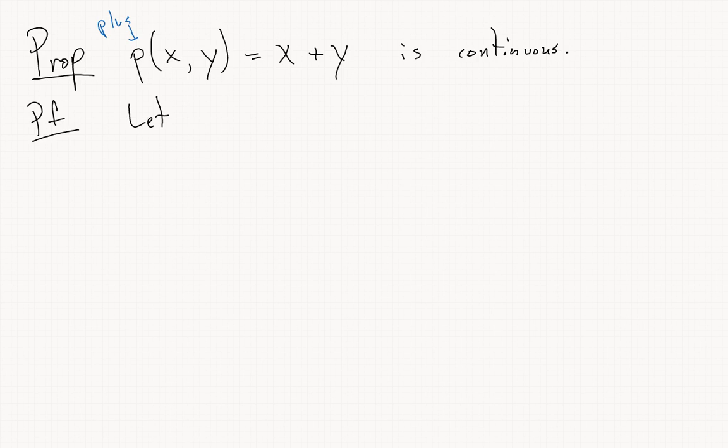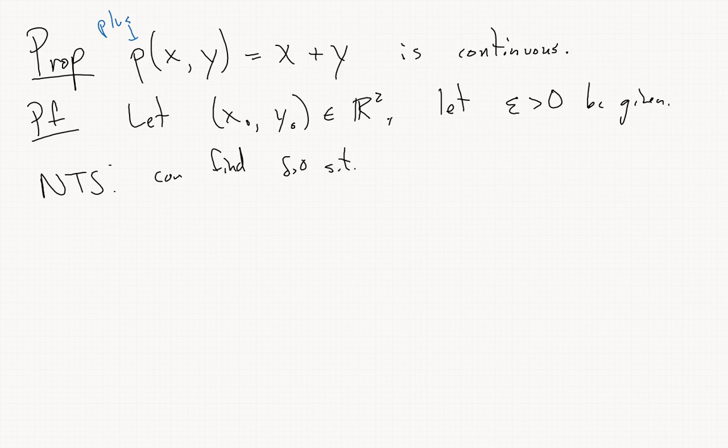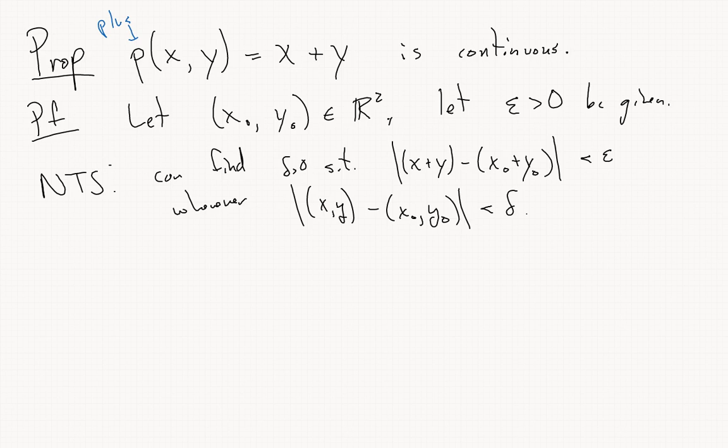Proof: Let (x0, y0) be a point in R^2, and let epsilon greater than zero be given to us. We need to show that we can find delta greater than zero such that |x+y - (x0+y0)| is less than epsilon whenever the distance from (x,y) to (x0,y0) is less than delta.